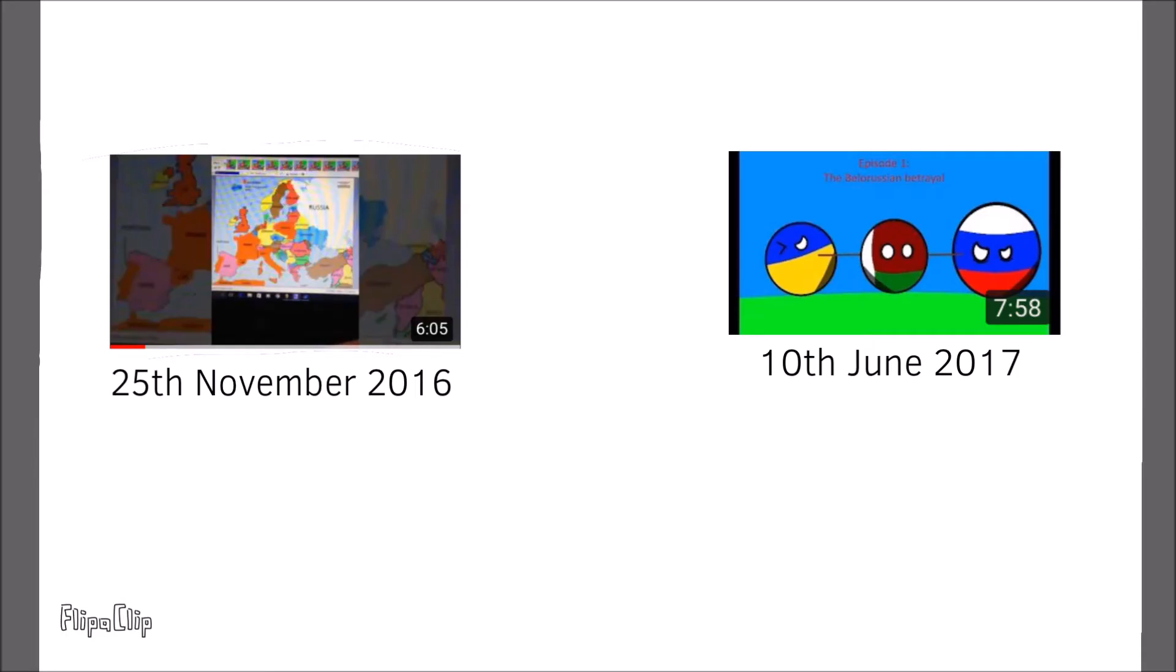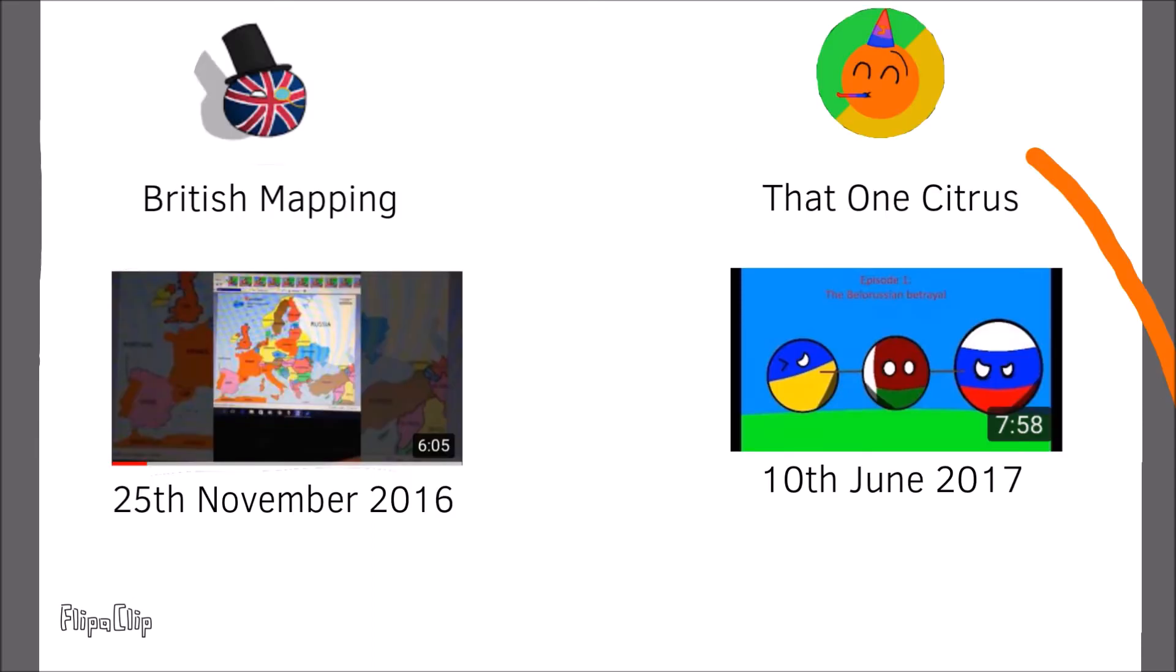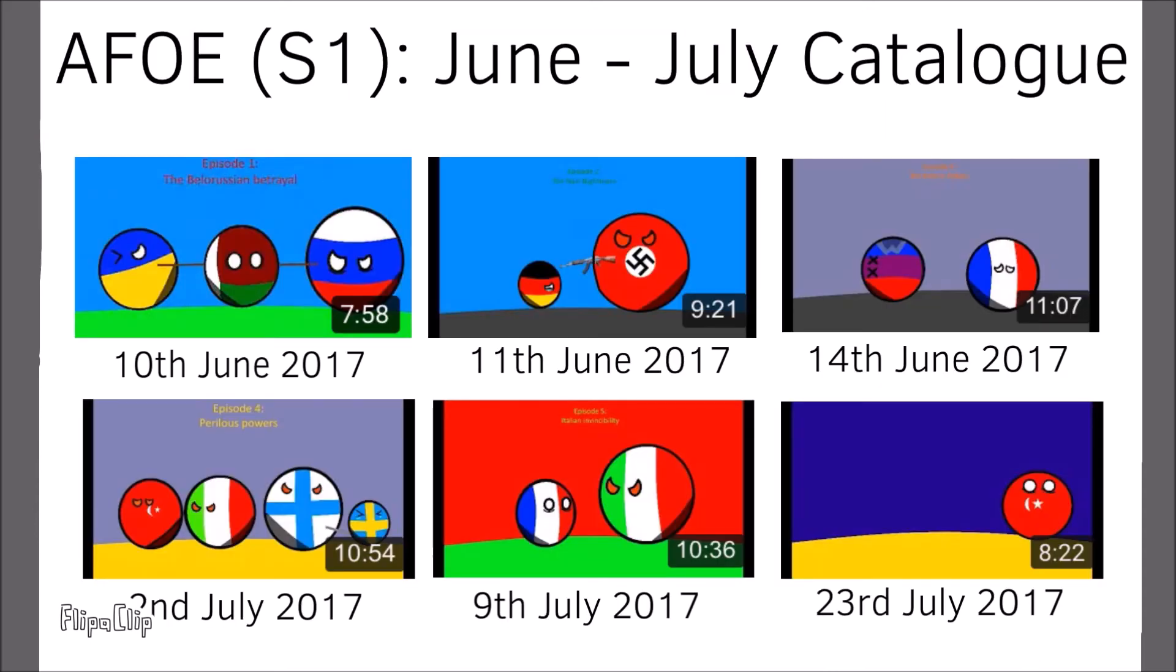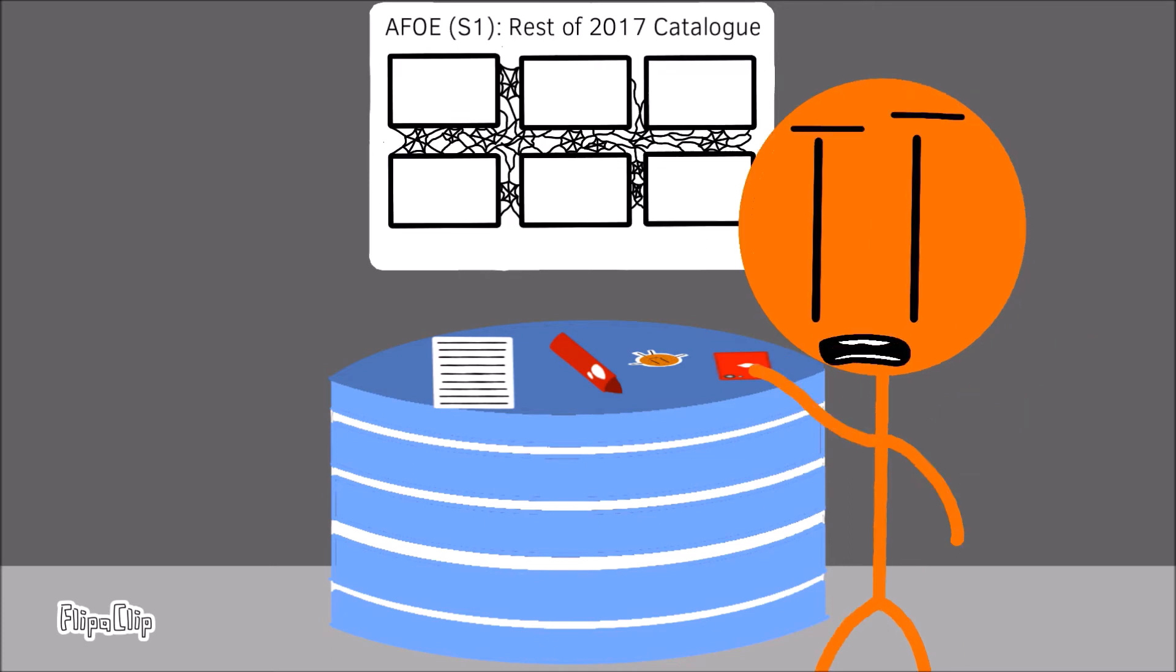But we don't care about that anymore. No, what we do care about now is the 10th of June 2017, which was when I first started uploading mapping videos on this channel. Alternate Future of Europe, not the alpha version, was the first series I started uploading through the June and July of that year, but after the first six episodes it went on a several month delay and didn't come back until 2018.